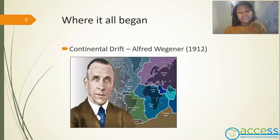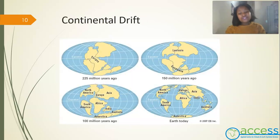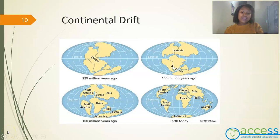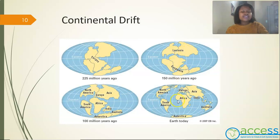Where did it all begin? It started with the famous German meteorologist Alfred Wegener. Alfred Wegener came up with the continental drift theory, theorizing that the continents were once part of one big supercontinent. He named this supercontinent Pangaea, which means all land. He further theorized that this supercontinent fragmented into two smaller land masses named Laurasia and Gondwanaland, which over time drifted into the continents we have today.